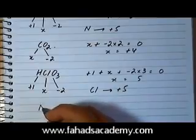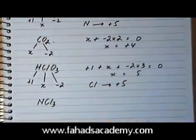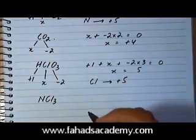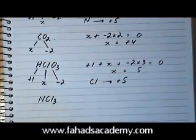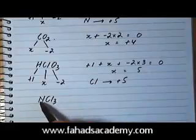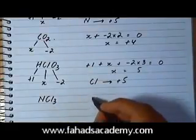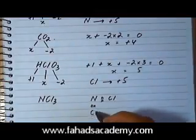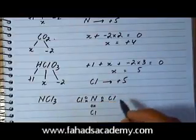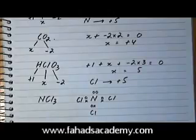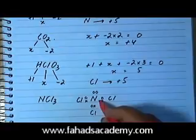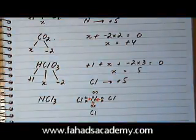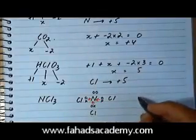Another example: NCl₃. This is an interesting molecule where we can use our understanding of electronegativity to find the oxidation states of both elements. Chlorine would normally be minus one, but since it is bonded with nitrogen, which is an even more electronegative element, if we draw the structure of NCl₃, there would be two electrons shared between nitrogen and chlorine making three individual bonds, with a lone pair on nitrogen. Since nitrogen is more electronegative, all these electrons reside closer to nitrogen, so nitrogen effectively gains three electrons — nitrogen is minus three.